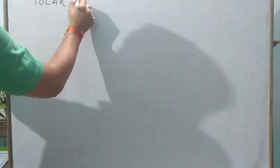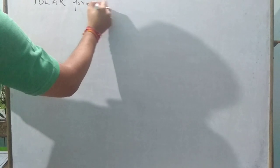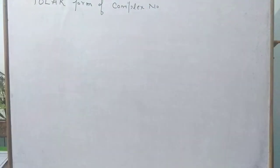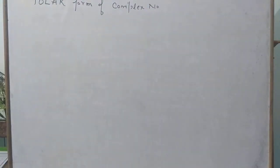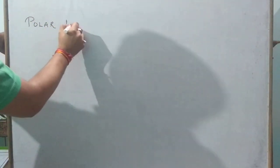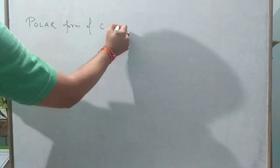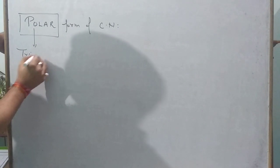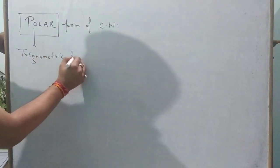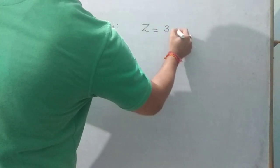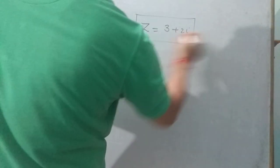Polar form of complex numbers is also known as trigonometric form. When we write Z equal to 3 plus 2i, that is known as the Cartesian form.